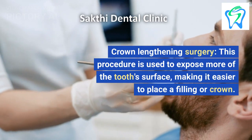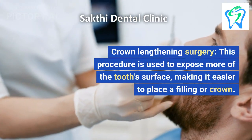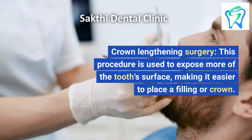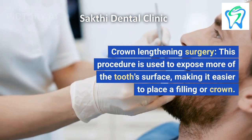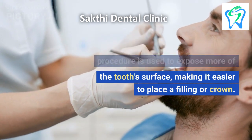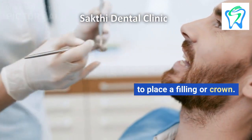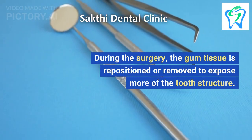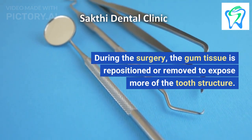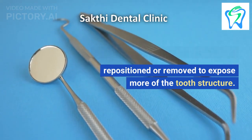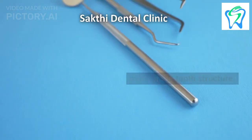Crown Lengthening Surgery is used to expose more of the tooth surface, making it easier to place a filling or crown. During the surgery, the gum tissue is repositioned or removed to expose more of the tooth structure.